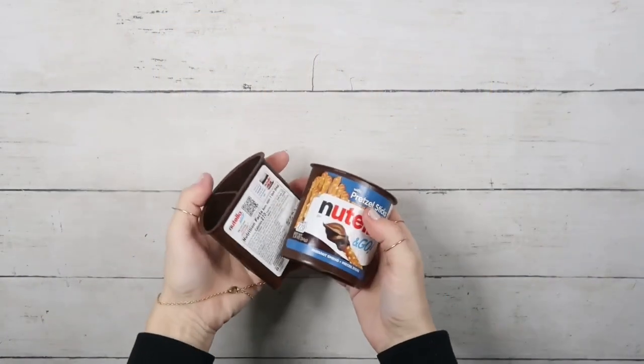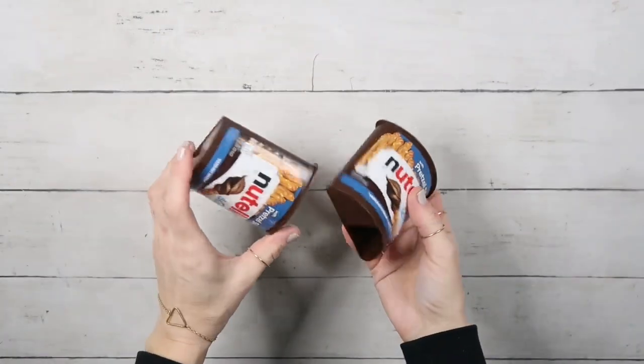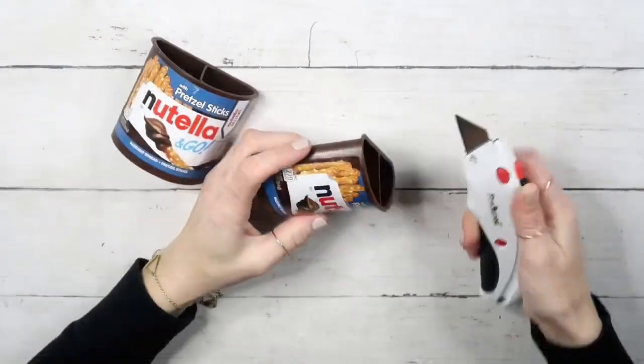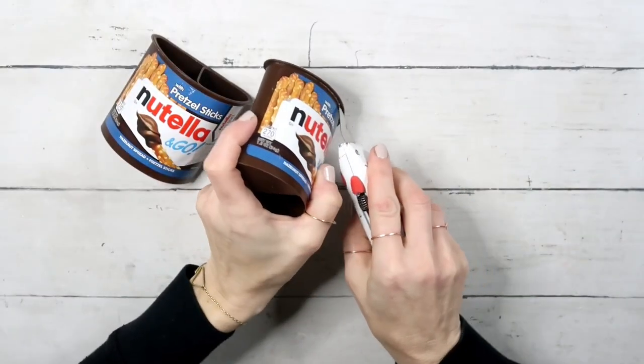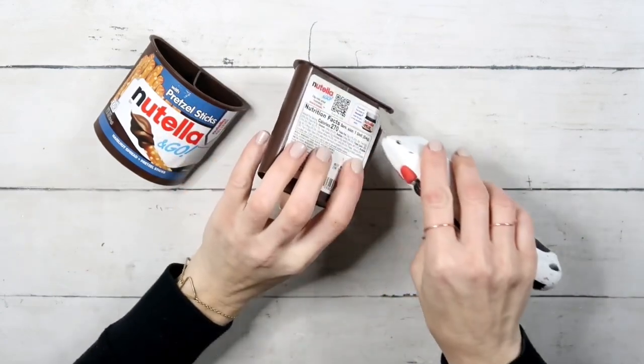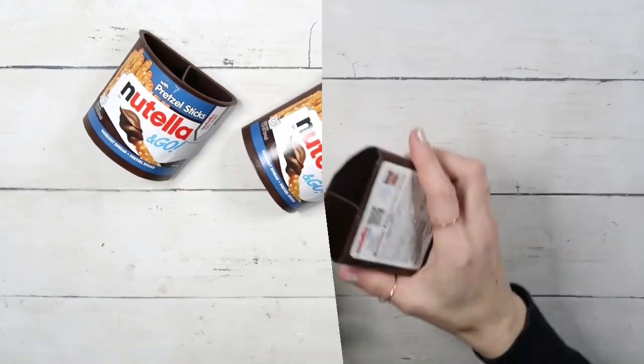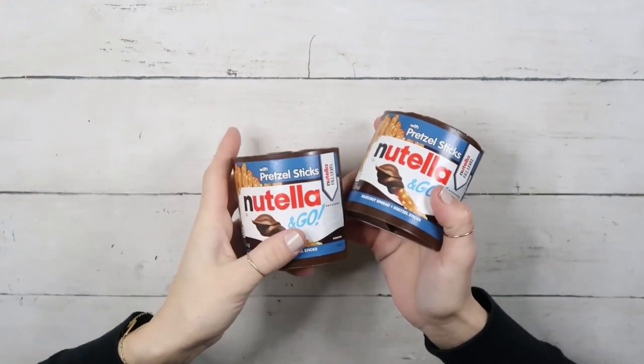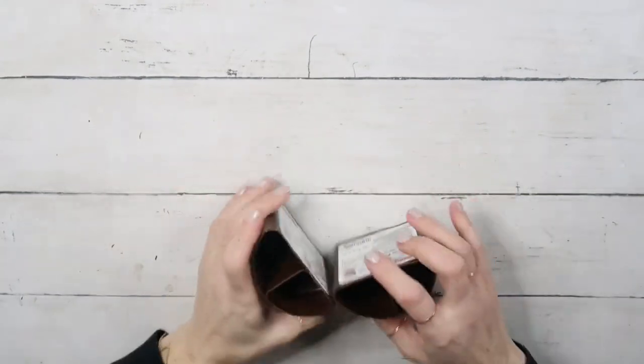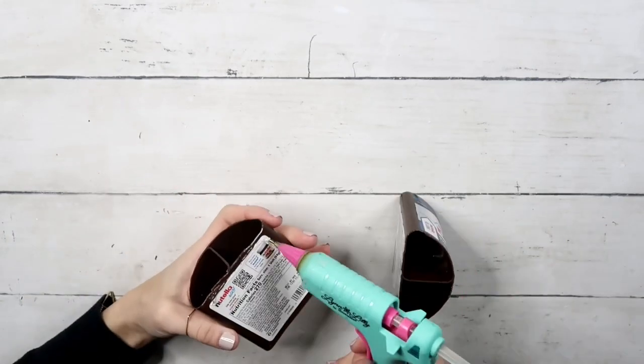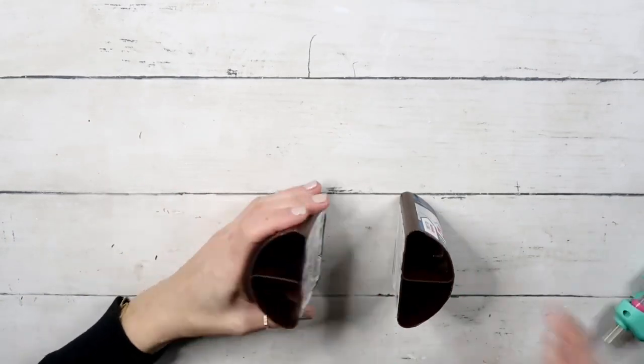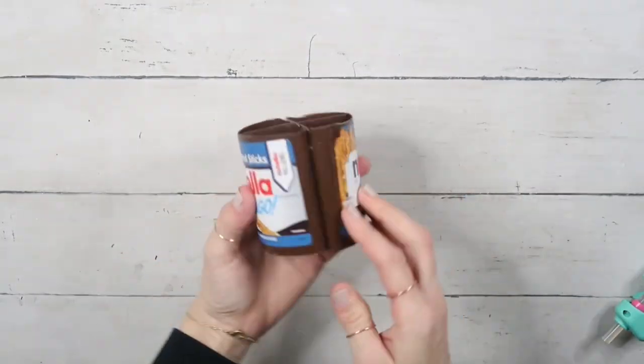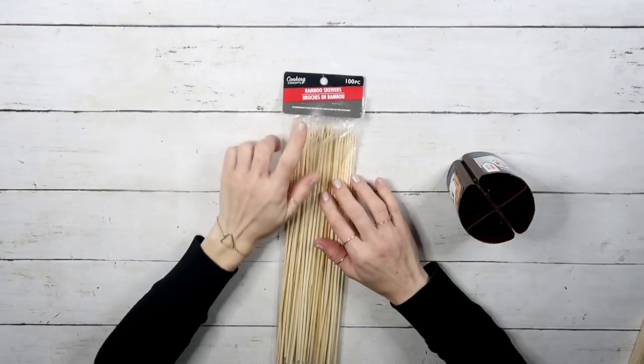DIY number three: I'm taking two of these Nutella On The Go containers and I am going to take my exacto knife, or actually box cutter, and cut off that lip that is on the top. It doesn't have to be perfect but do as best as you can. Be careful with any sharp objects.